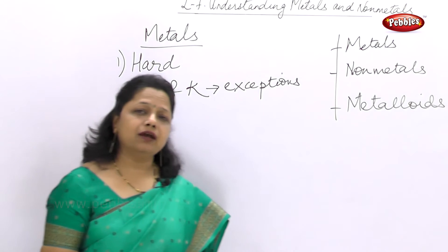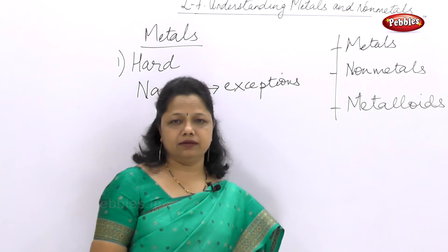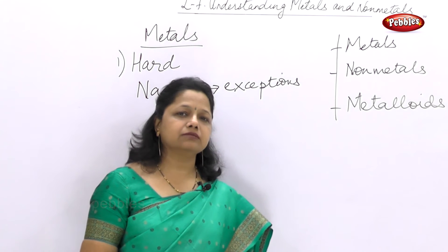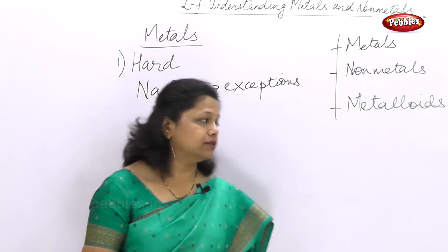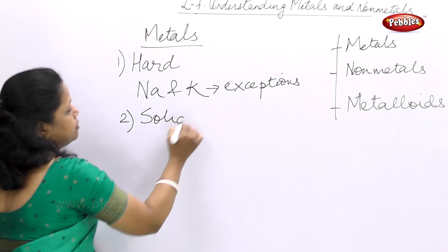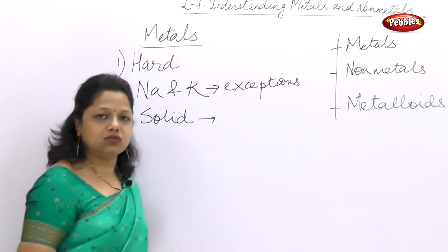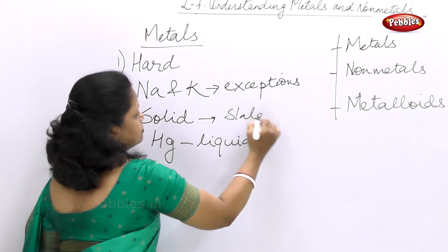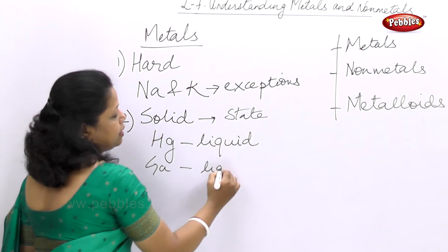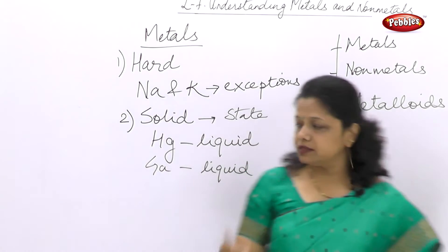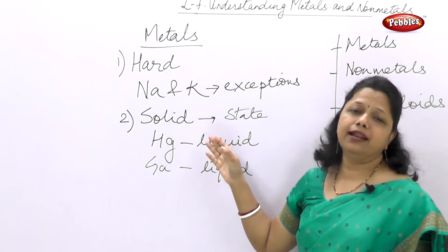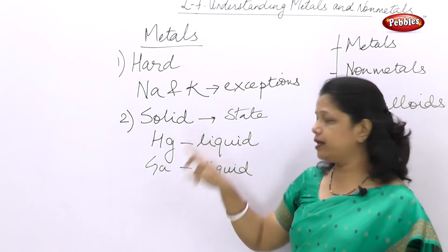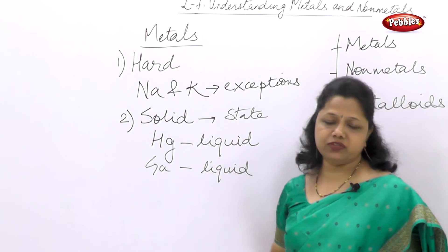The second property is the state of metals. Some metals are solid — like gold, silver, copper, and aluminium. But are there any liquid metals? Yes. All metals are solid except mercury, which is in a liquid state. Gallium is also in a liquid state. Mercury's symbol is Hg and gallium's symbol is Ga. This is the second property by which we can identify metals.